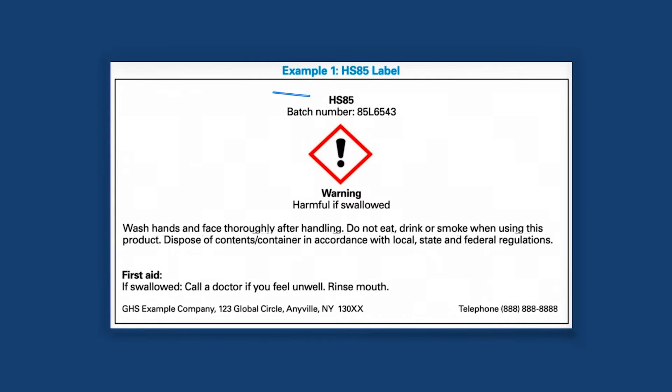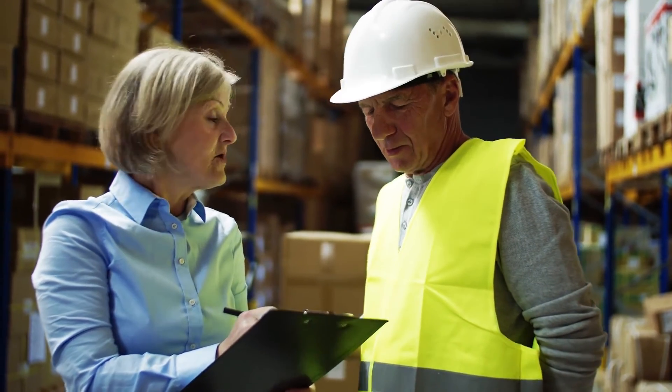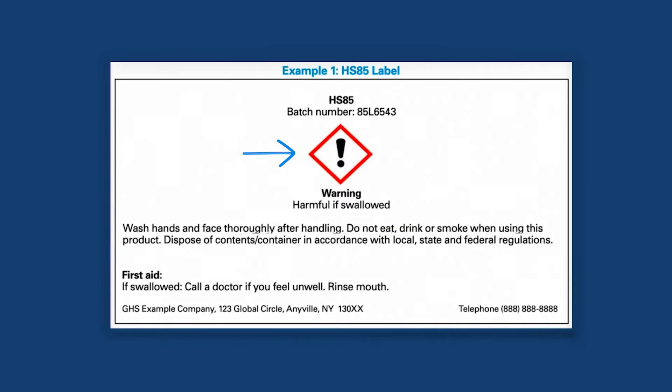Let's take what we learned about GHS label elements and put them to use with two real-world chemical examples. First, we have a label for a chemical with the product identifier HS85. Although not a common name, it's a unique code that specifies exactly what chemical we're dealing with and which safety data sheet it corresponds to. This chemical isn't particularly hazardous, as we can see from the exclamation mark pictogram, signifying a moderate health hazard. The pictogram is followed by the less severe signal word, warning. The label tells us it's harmful if swallowed, which is the hazard statement.